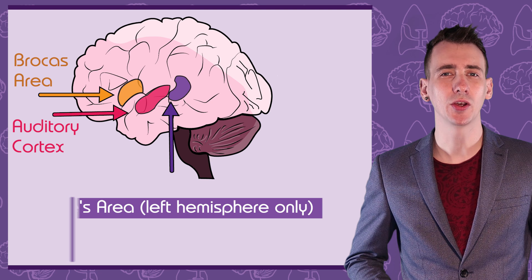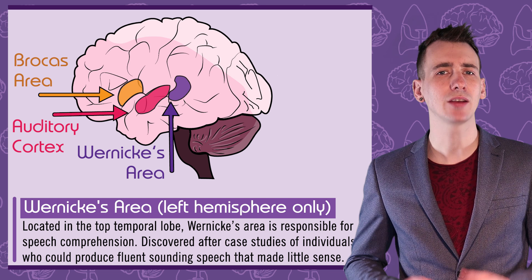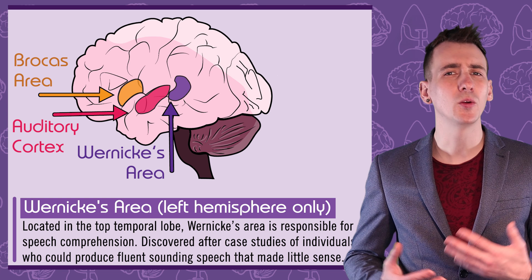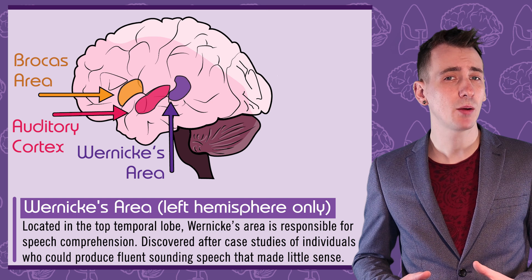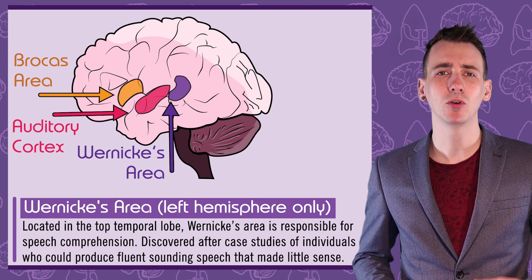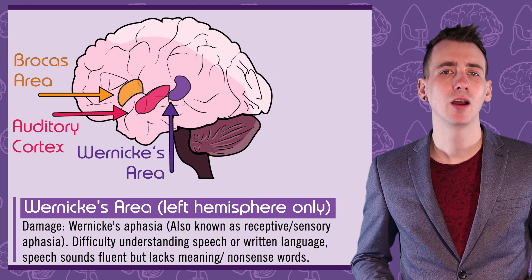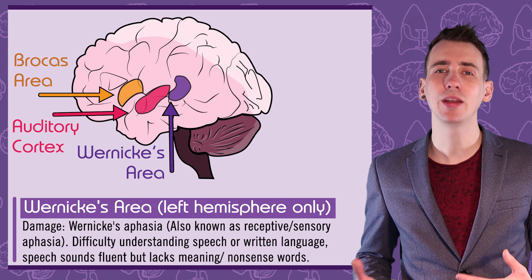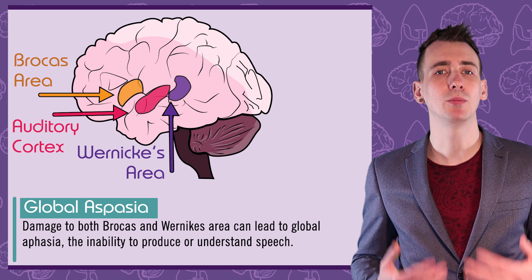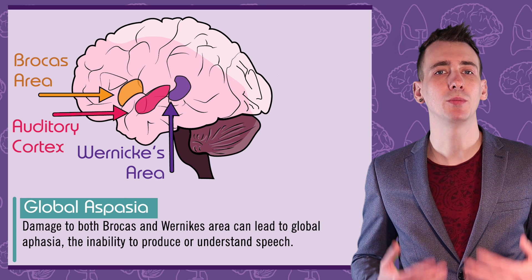Wernicke's area is also associated with the auditory cortex in the left hemisphere, located in the temporal lobe just next to the auditory cortex. Karl Wernicke found that some patients could produce quick, fluent-sounding speech but not understand speech — and the speech they produced was often strange, making no sense. Post-mortems on these patients showed damage in what is now called Wernicke's area, the area used to interpret speech. Damage to Wernicke's area leads to Wernicke's aphasia — also known as receptive or sensory aphasia — a difficulty in understanding written or spoken language and producing speech that, while sounding fluent, lacks meaning. Damage to both Broca's and Wernicke's areas can lead to global aphasia: the inability to produce or understand speech.